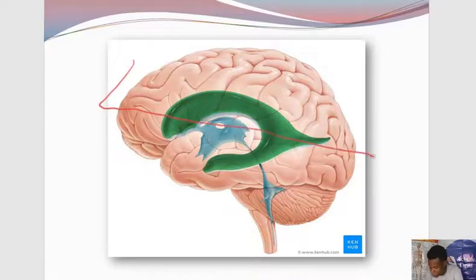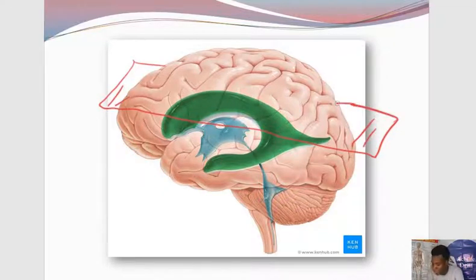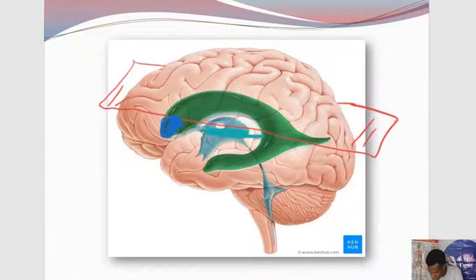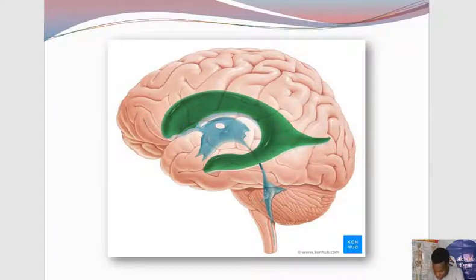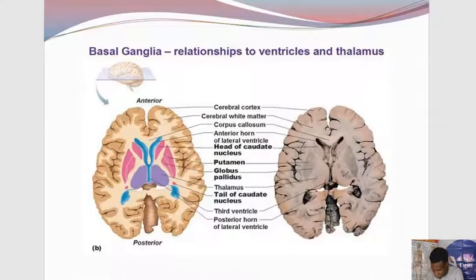Remember we are cutting through the brain in a horizontal direction. If we are cutting the brain in this particular direction, we'll actually be seeing two parts of the lateral ventricle. Initially we'll come across the anterior horn of the lateral ventricle, and we'll also cut across the third ventricle. Behind — posteriorly — we'll be cutting across the posterior horn of the lateral ventricle.